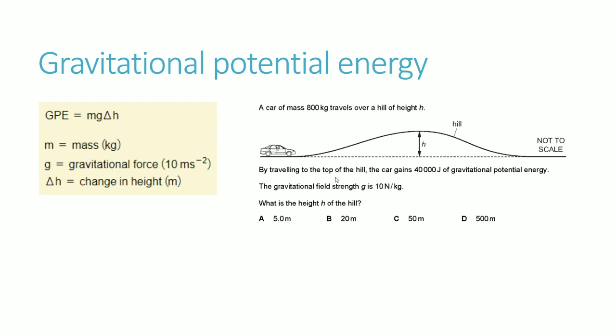Gravitational potential energy is also extremely important. You calculate it as mass times gravity times the change in height. Mass is in kilograms, gravitational field strength on Earth is 10 meters per second per second, and change in height is how far up you are from ground level. Let's take a look at how this might work.